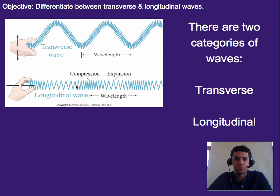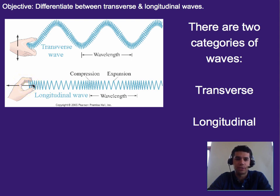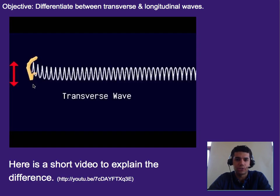To make a transverse wave, you wiggle your hand up and down on a slinky. To make a longitudinal wave, you kind of pulse your hand back and forth on a slinky. To explain that a little bit further and to see it in motion, I've got a video for us to watch.